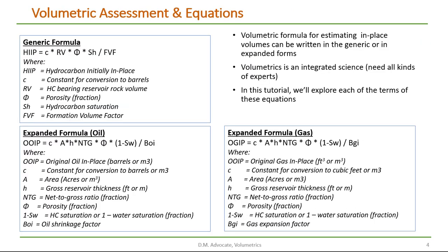Let's take a look at the volumetric equations. In the generic form, we say that the hydrocarbons initially in place is equal to some constant for conversion to barrels times the hydrocarbon reservoir volume times porosity times the hydrocarbon saturation divided by the formation volume factor.